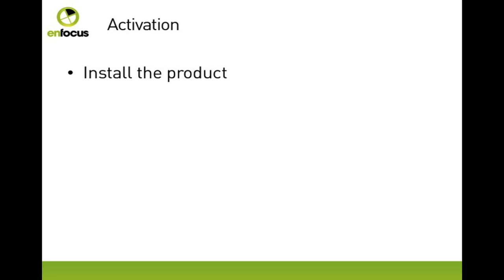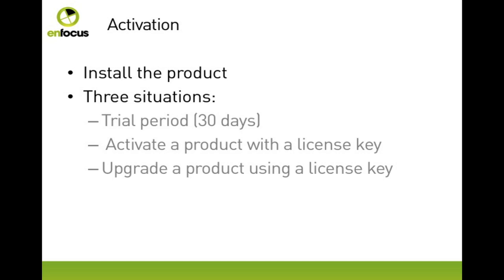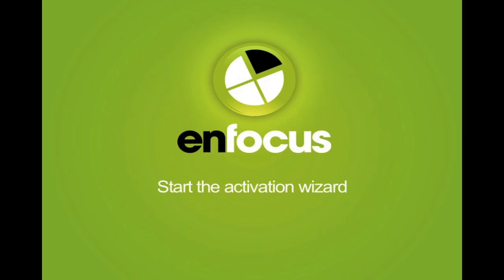You will of course have to install the product, but before you can actually use it, you will have to activate it. You will find yourself in one of the following three situations: you want to start a trial period, you want to activate a product with a license key, or you want to upgrade a product from a previous version, also using a license key. In all three cases you have to start the Activation Wizard.